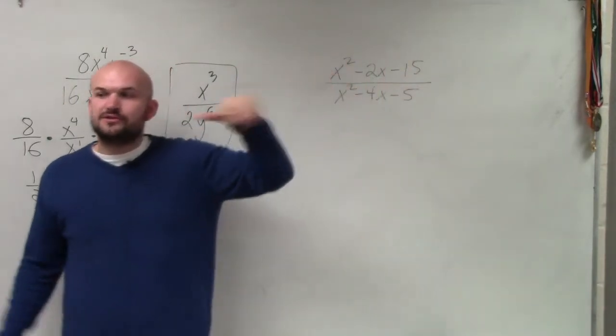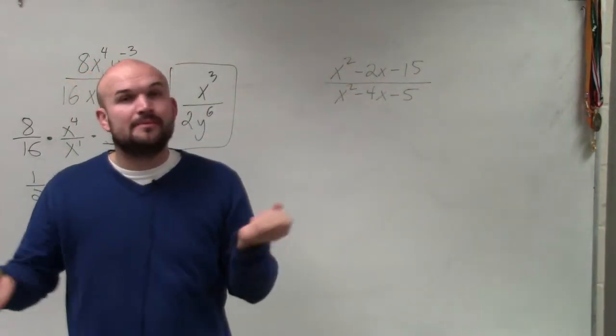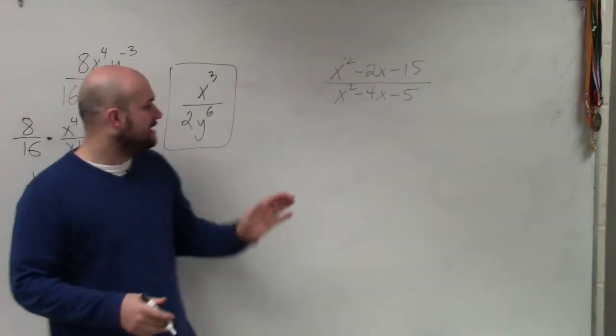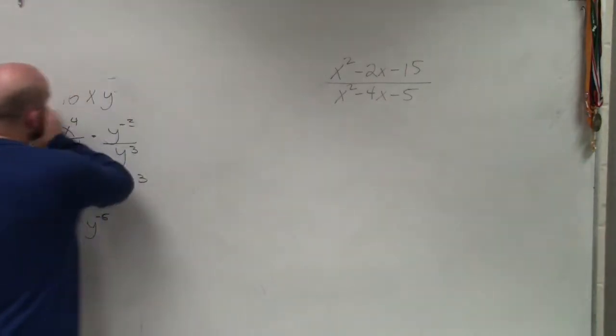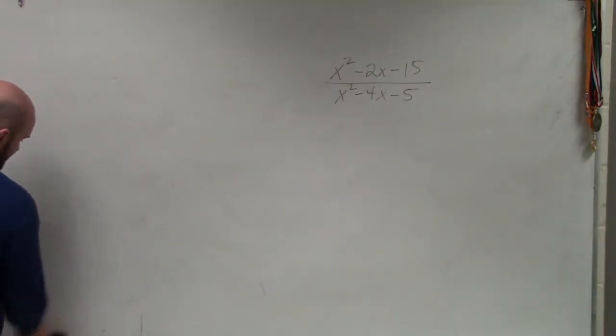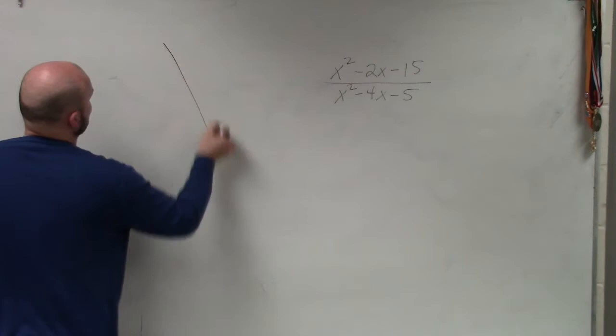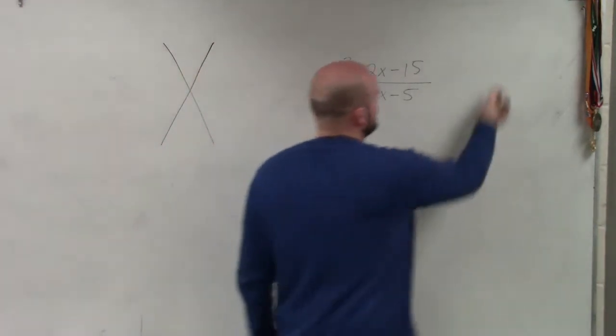So the best way to do whenever you see terms that are separated by addition or subtraction is to apply factoring. Now you can see we have a trinomial in the numerator and a trinomial in the denominator. So we're going to have to use our factoring technique, which we did last chapter.